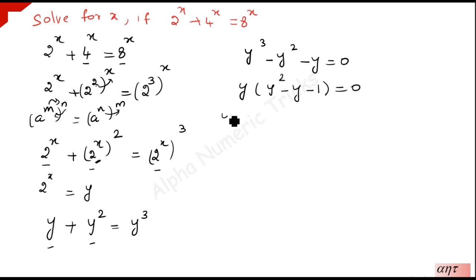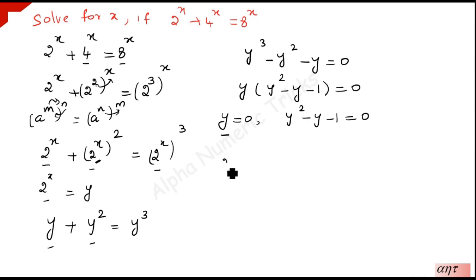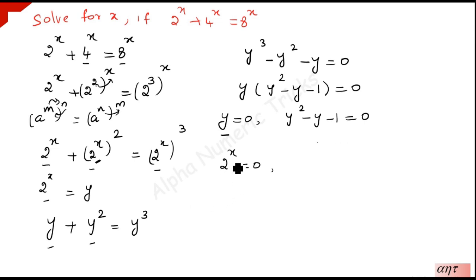The product of two terms equals zero implies y is equal to 0, or y squared minus y minus 1 is equal to 0. Since y equals 2 to the power x, we have 2 to the power x equals 0 from the first case — but this is not possible for any value of x. So we omit this solution and find the other solution for x.